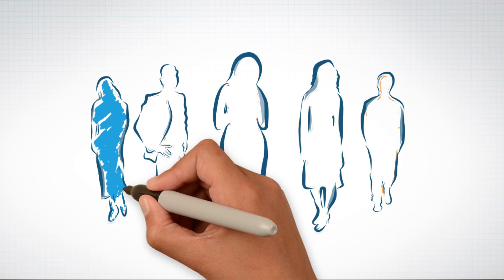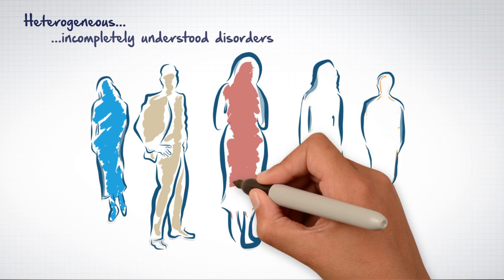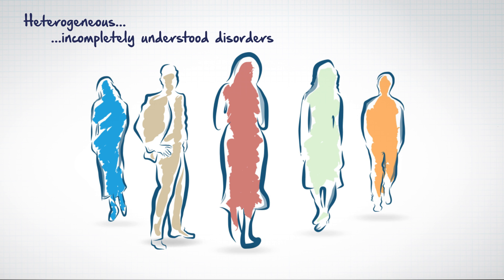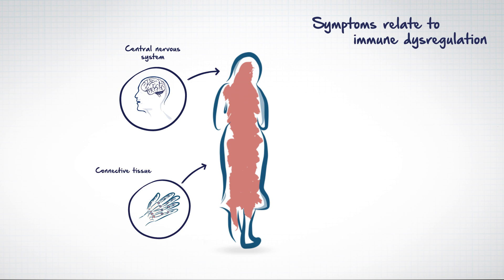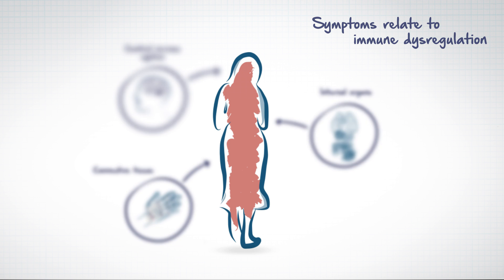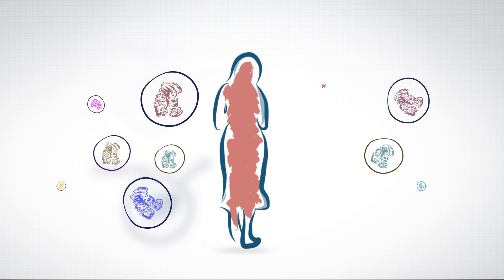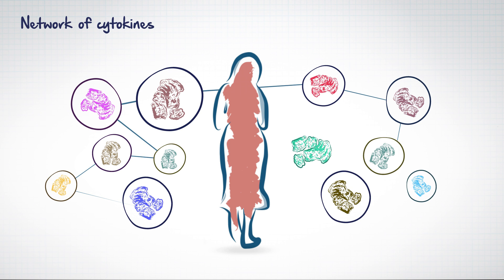Autoimmune diseases are a heterogeneous group of incompletely understood disorders. Patients who suffer from them have numerous symptoms relating to the dysregulation of their immune system as well as from widespread systemic inflammation. The complex pathophysiology of these disorders is regulated in part by a network of different cytokines.